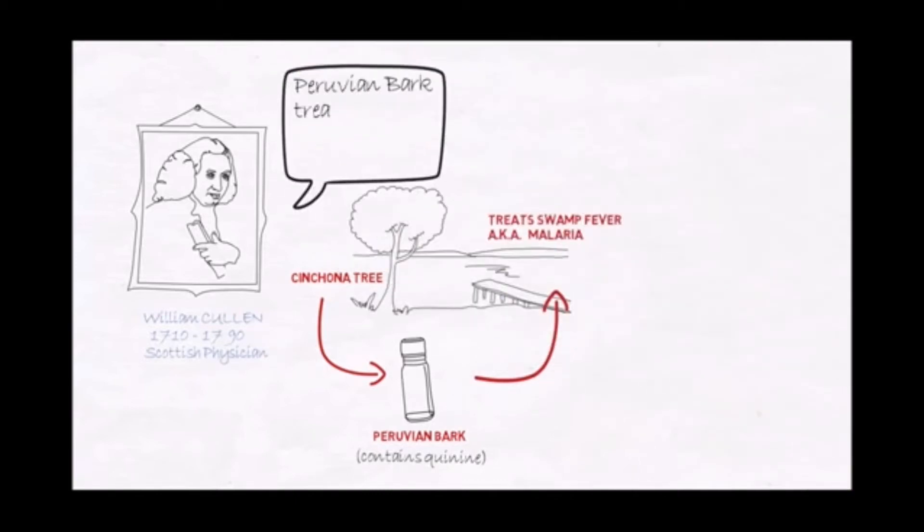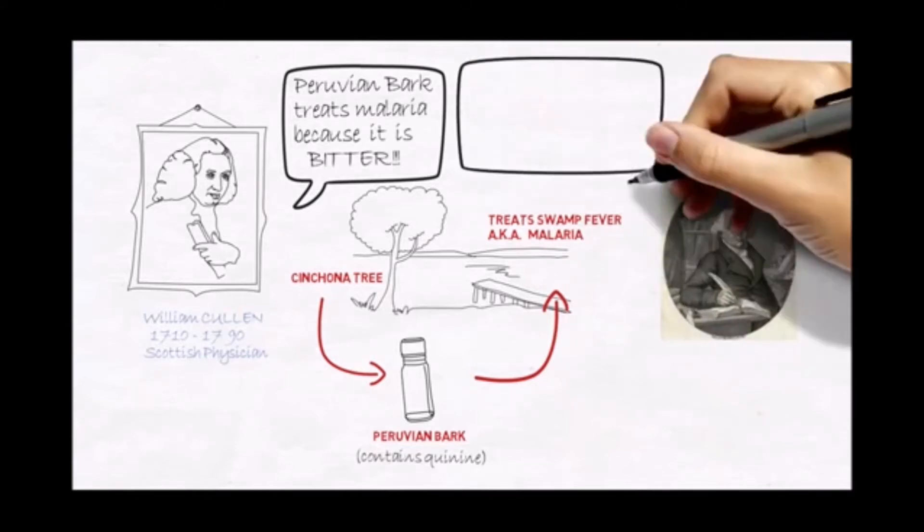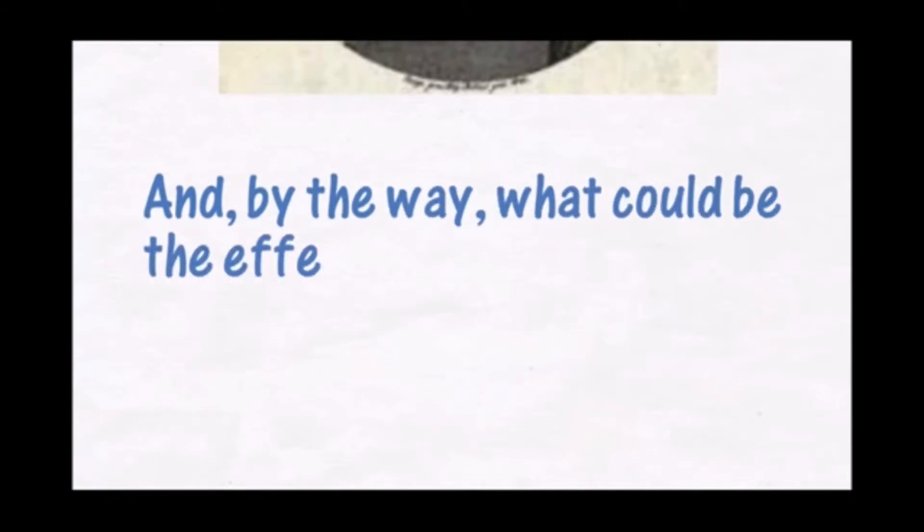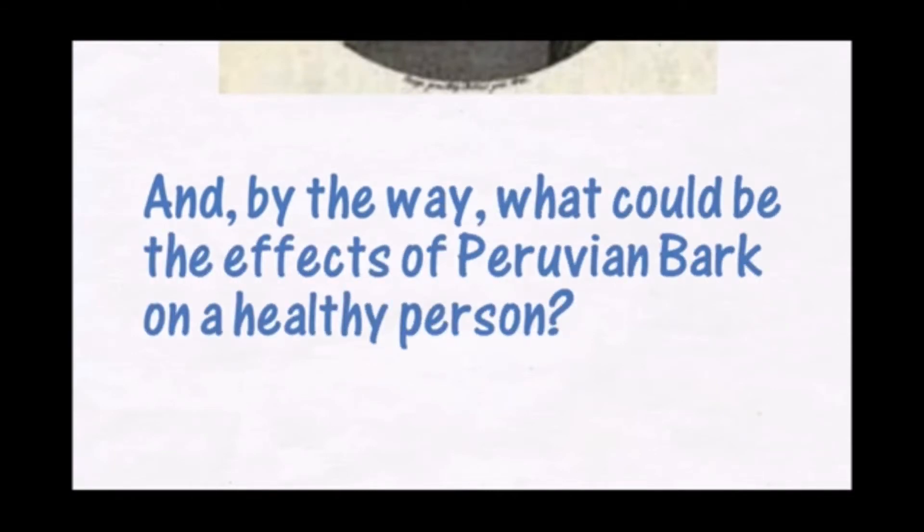Cullen attributed the action of the drug to its extreme bitterness, but Hahnemann thought otherwise. First, he thought it is necessary to know the action of the drug on a healthy person.